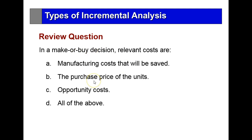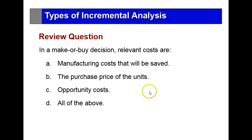Quiz question: in a make-or-buy decision, relevant costs are A) manufacturing costs that will be saved, B) the purchase price of the units, C) opportunity costs, or D) all of the above. The answer is D — all of the above.